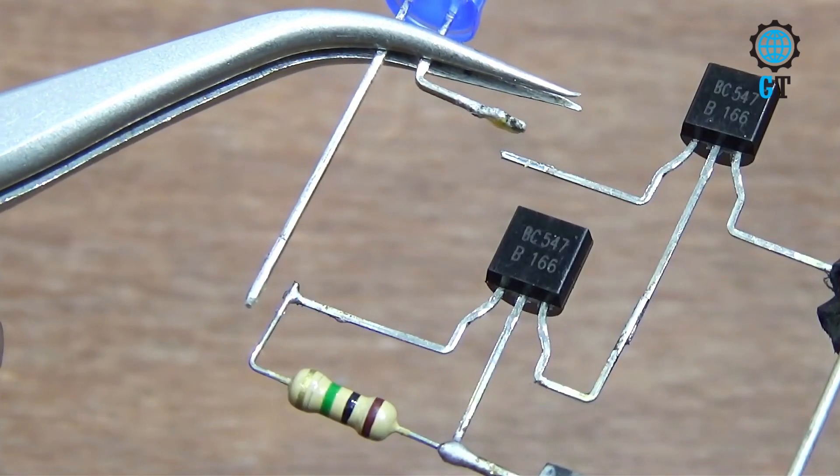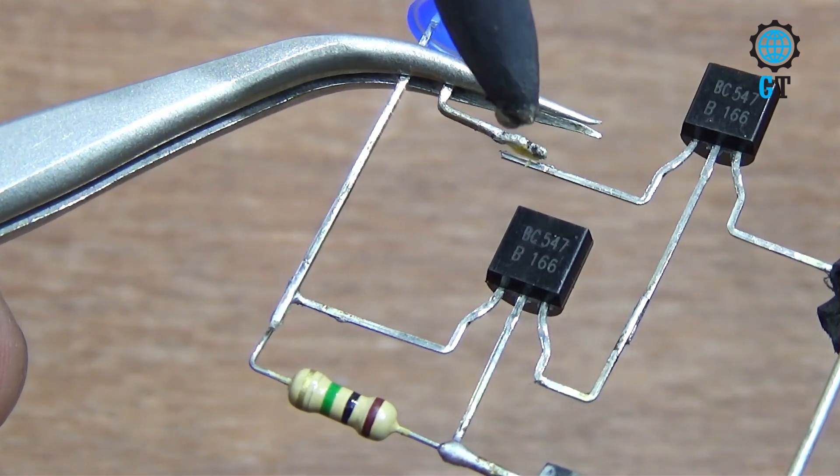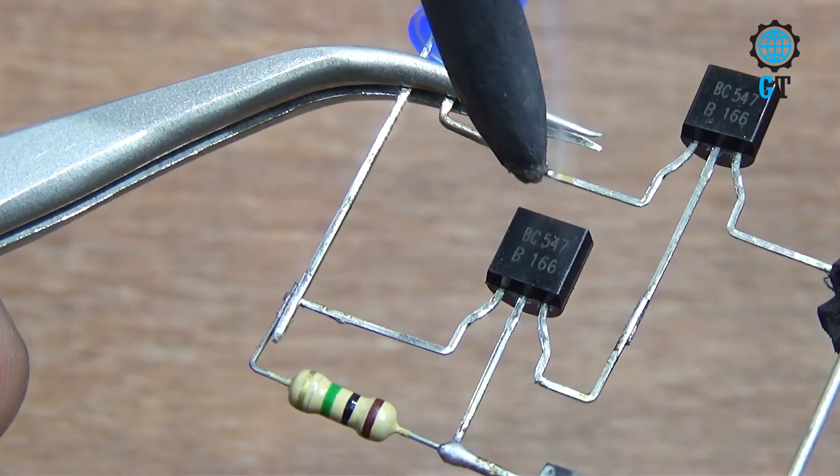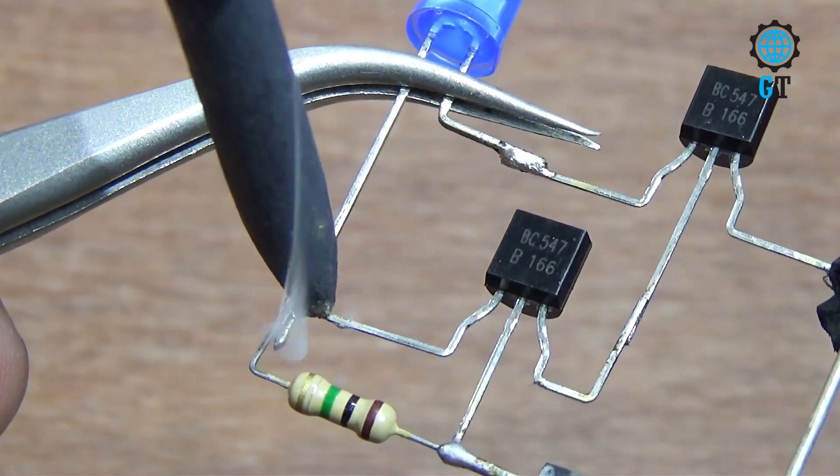Now we connect LED light. We connect LED positive and negative, these two legs with two collectors of these two transistors. We connect positive leg where the resistor is connected.